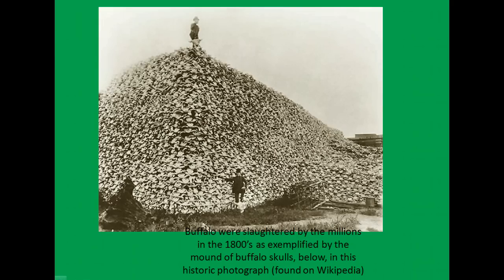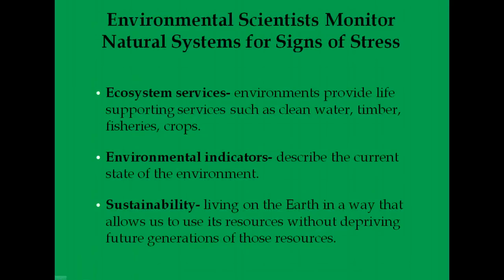This picture shows buffalo skulls — how millions were slaughtered in the 1800s. They were hunted to the point where only about 50 were left, then finally protected so they grew to a few thousand. As people moved west, they hunted them for food, for game, and for their pelts. One of the critical questions for environmental scientists is whether the planet's natural life support systems are being degraded by human-induced changes.